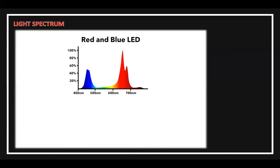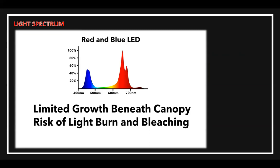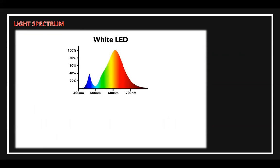Here's how a plant reacts to a red and blue grow light. Because there's a limited amount of green and infrared light to penetrate deep into the plant, growth and development beneath the canopy may be limited. Also, the red and blue saturation at the tops of leaves can lead to light burn or bleaching. Additionally, in some red and blue grow lights, the amount of blue is so high that it can lead to diminished growth. A typical white LED spectrum does a great job covering the PAR range and addresses a lot of these issues, but what's critical is the lack of infrared light.